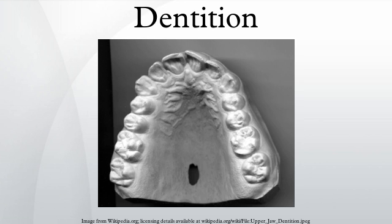Tooth naming discrepancies: teeth are numbered starting at one in each group. Thus the human teeth are I1, I2, C1, P3, P4, M1, M2, and M3. In humans, the third molar is known as the wisdom tooth, whether or not it has erupted.